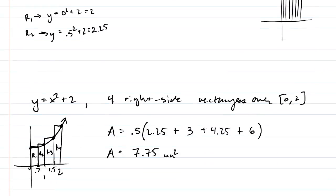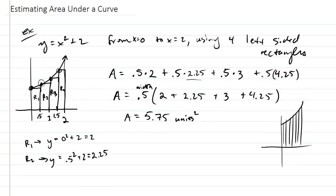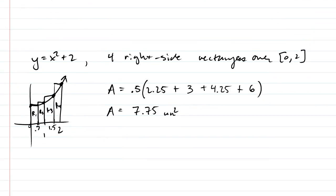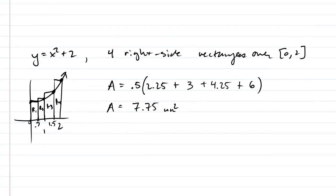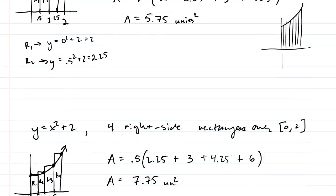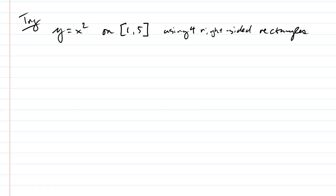So compared, this one up here, our first, is an underestimate. This one is an overestimate. And so you would assume that the area probably is somewhere around 6.25 or so. So now you should try this. Find the area under y equals x squared on the interval 1 to 5. And you should use, like we did before, four right-sided triangles. And right side is important. Make sure that you are getting heights based on the right side of your rectangles.